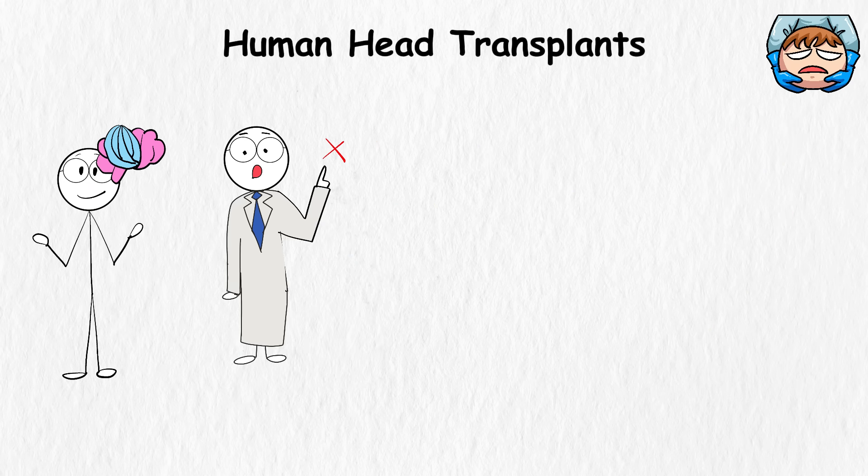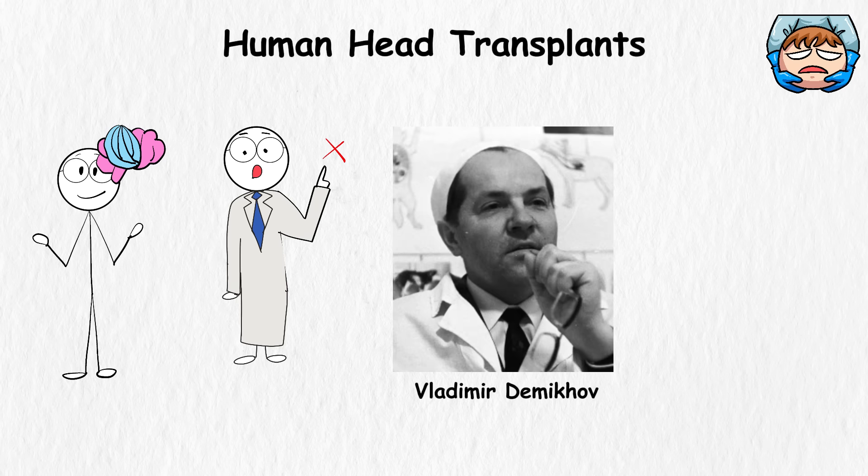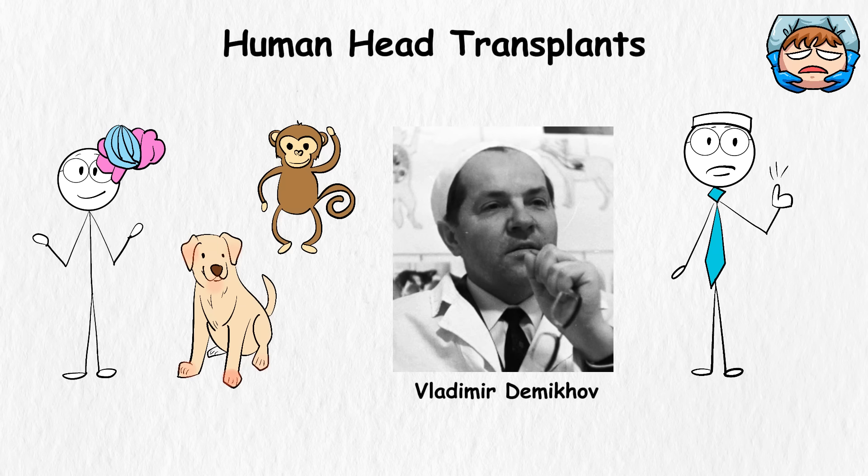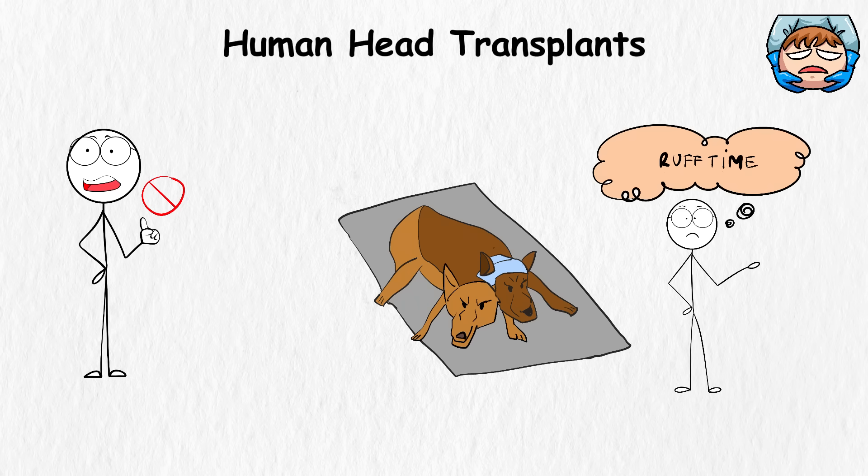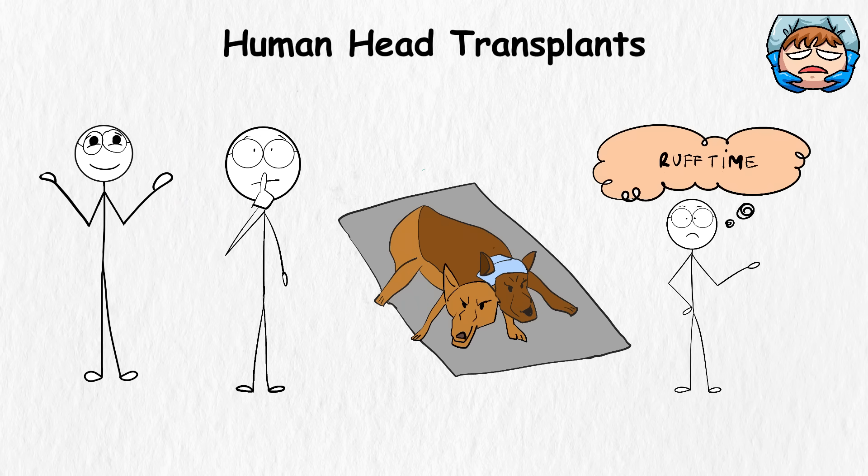The first attempts at head transplants date back to the 1950s. Russian scientist Vladimir Demikhov was one of the pioneers, but his experiments were mainly on dogs and monkeys. He transplanted dog heads onto other dogs, but neither the head nor the body could survive for long. Let's just say it was a real rough time for those dogs, as they didn't quite get the heads up they needed to survive.